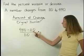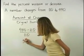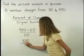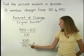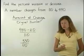440 minus 110 is 330, over 110, or 330 divided by 110, which is 3.